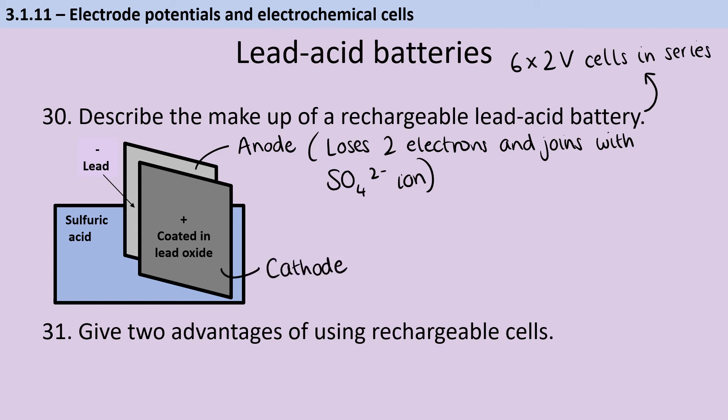So our anode here is going to lose two electrons from every lead atom and then it does that as it joins up with sulfate ions from sulfuric acid in order to make lead sulfate. Meanwhile, at the cathode, which is coated in lead oxide, it's going to gain hydrogen ions and the electrons that have been lost by the anode and also those sulfate ions again. And so actually both of these electrodes are producing lead sulfate, but the cathode is also making water at the same time.